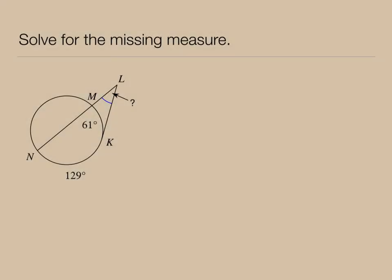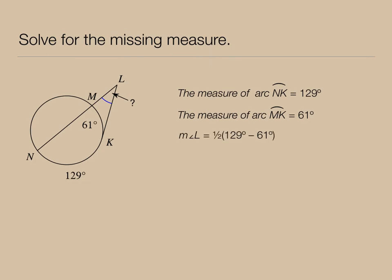We'll solve a similar problem. We're asked to find the measure of angle L, and we're given both arcs that it intercepts. There is arc NK, that's given as 129 degrees, and arc MK is 61 degrees. So how would we find the measure of angle L? It's half the difference of 129 minus 61, so that's half of 68 or 34 degrees. So that's the process for finding the angle measure of these style problems.